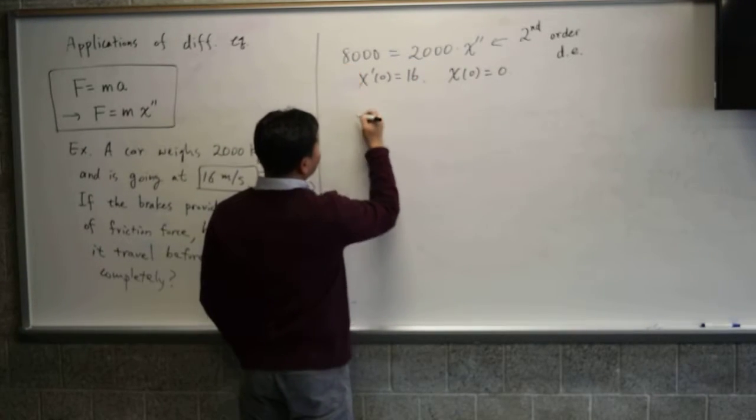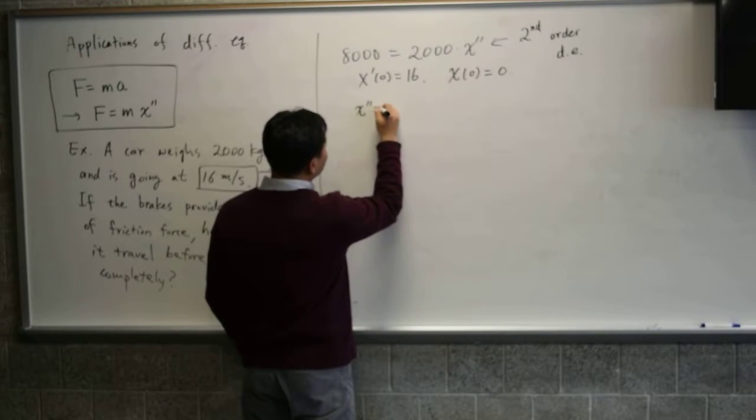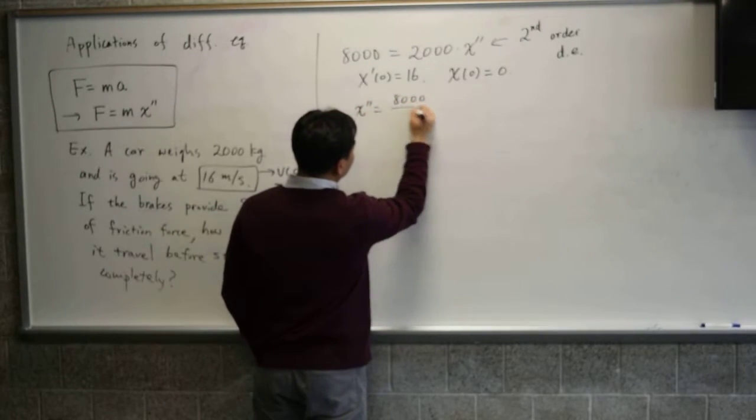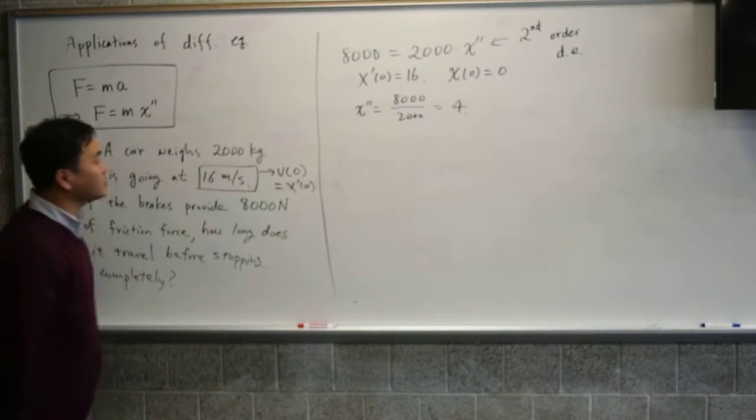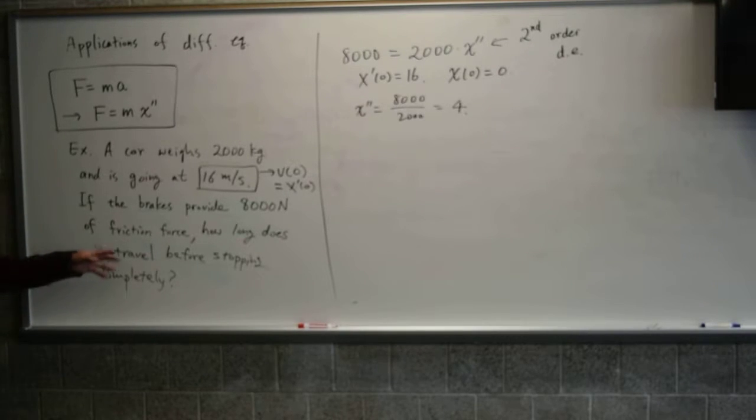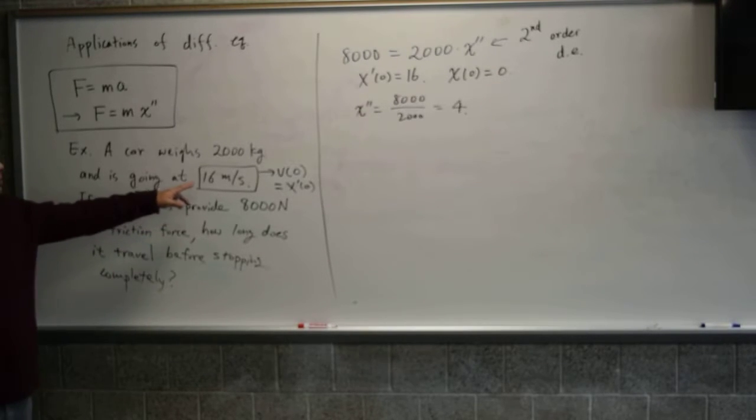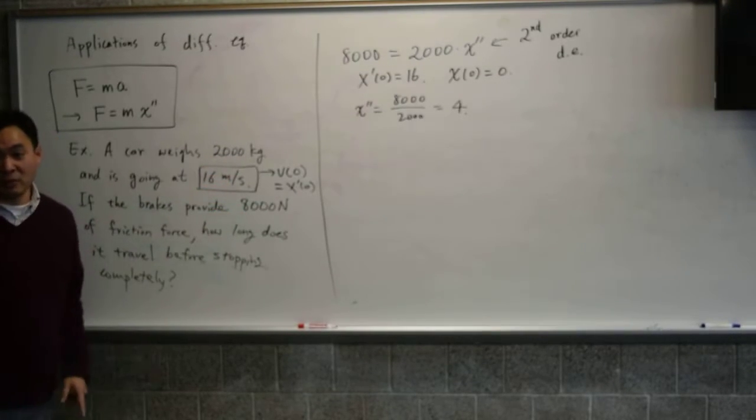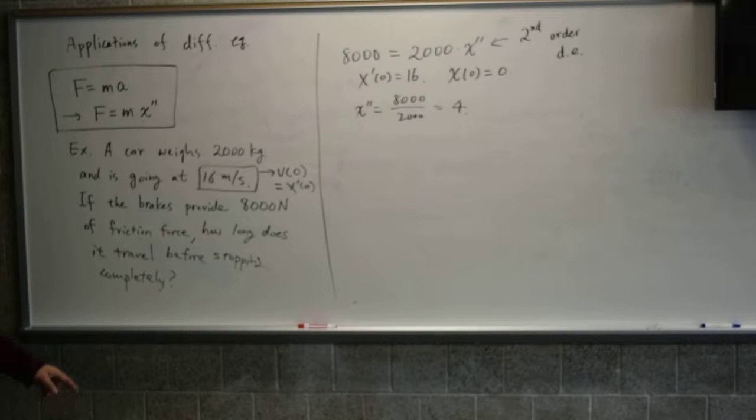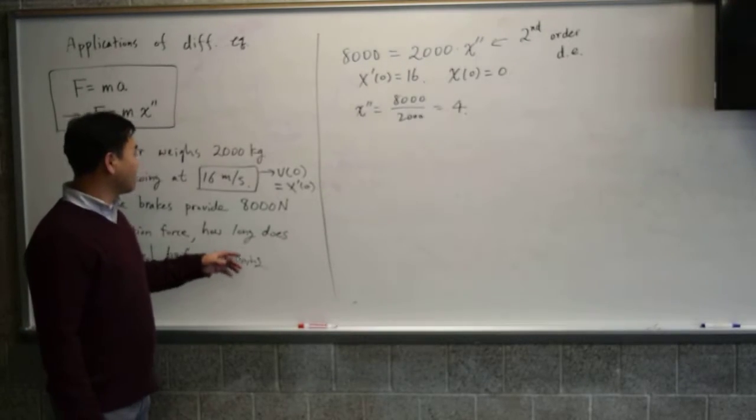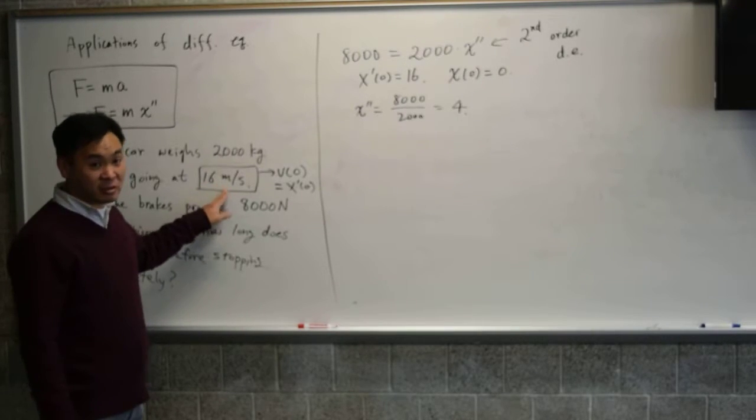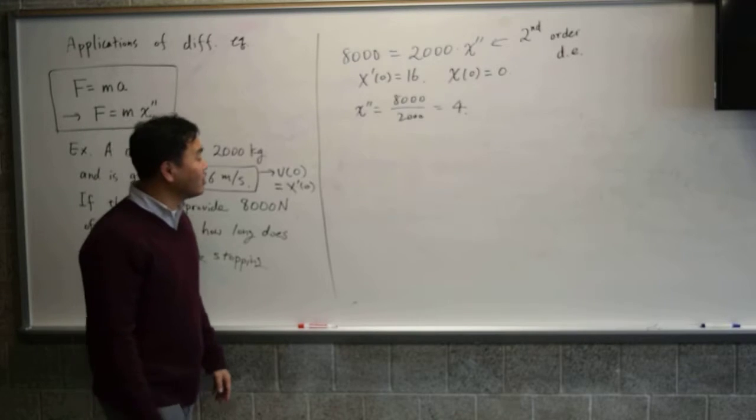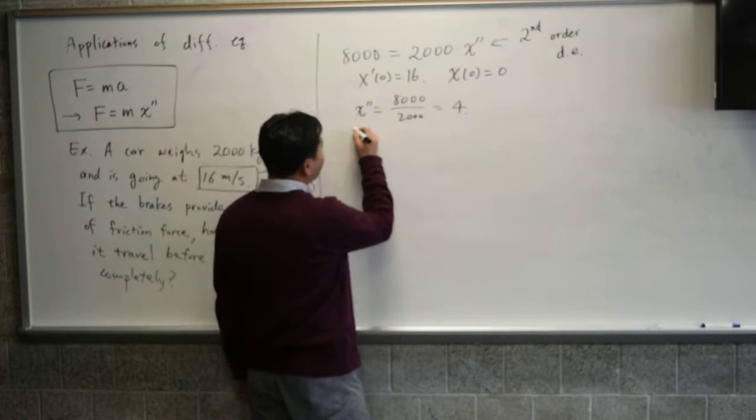You divide by 2,000. So x double prime is 8,000 over 2,000, which is 4. And I don't have to write any units in the solution because all the units are in MKS units. So in that case everything works fine. However, if the question had like kilometers per hour here, then you have to convert to meters per second before solving this.